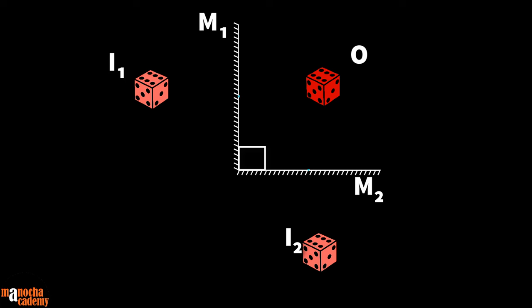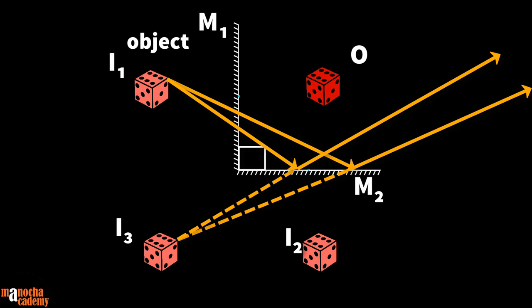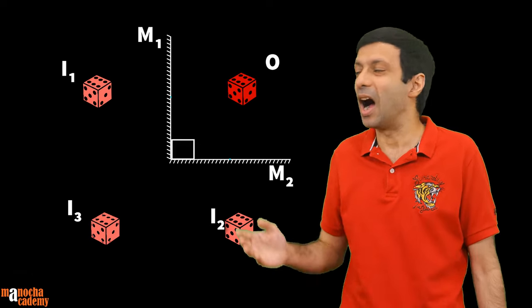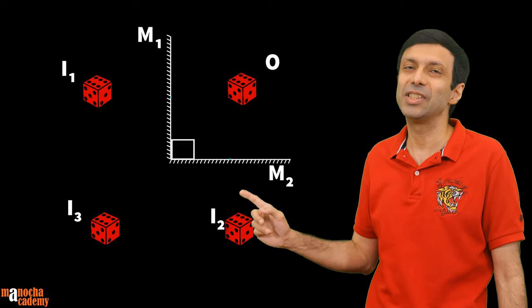So how is the third image produced? The trick is that image I1 acts as an object for mirror M2, and due to reflection at M2, it forms another image I3. Note that the object does not have to be exactly in front of the mirror — as long as rays of light can reach the mirror, an image will be formed. Now, I2 can also act as an object for M1 and form another image, but interestingly, this image falls exactly at I3. So there are only three images in total — I1, I2, and I3 — because at I3 both images overlap.